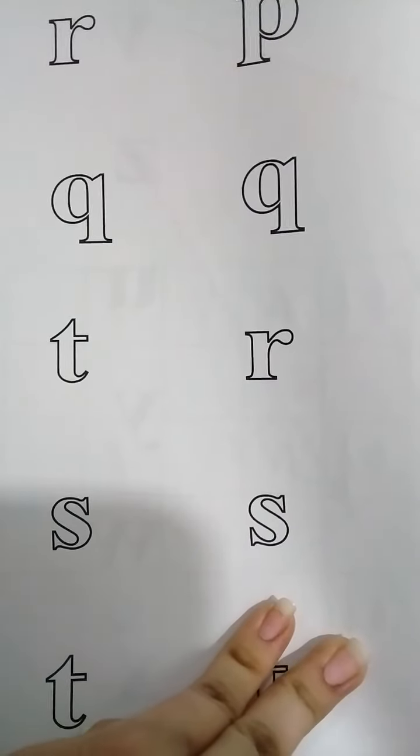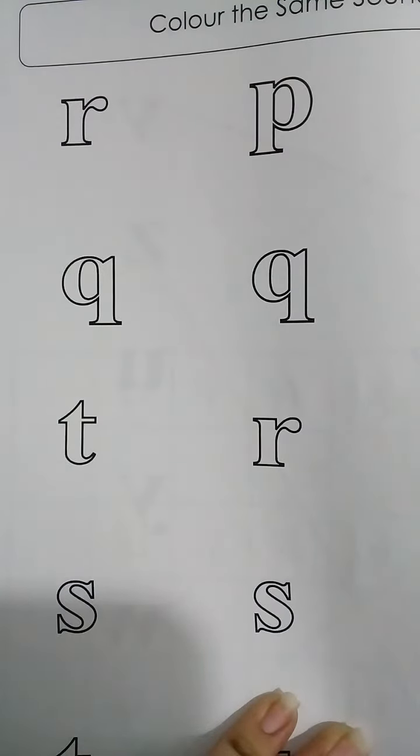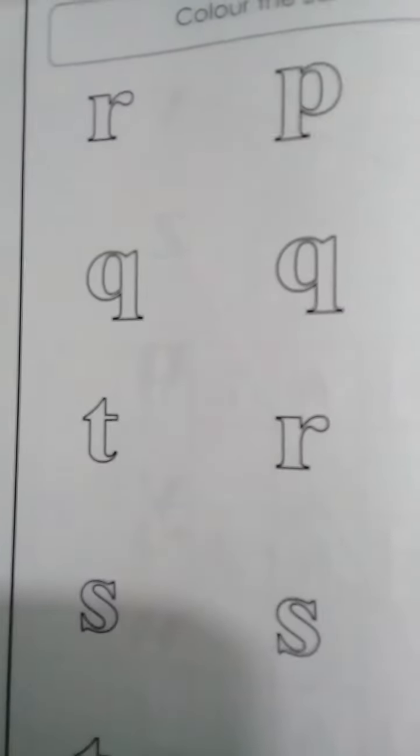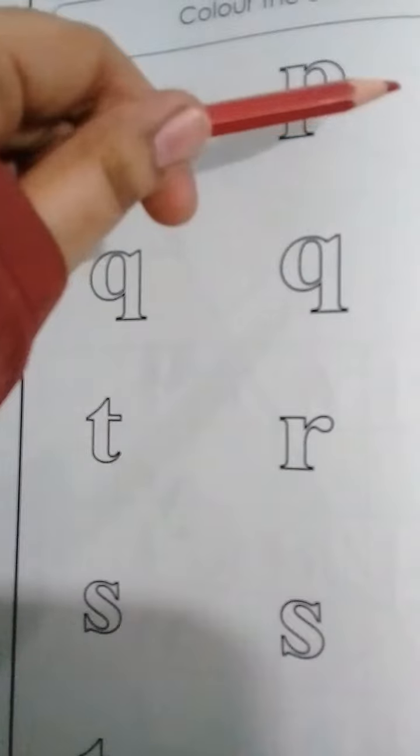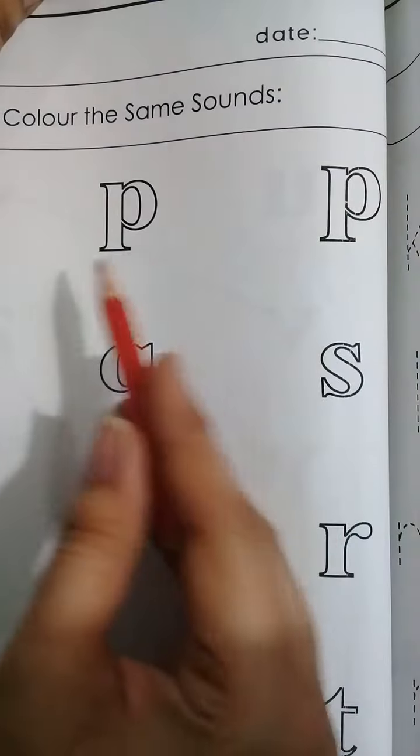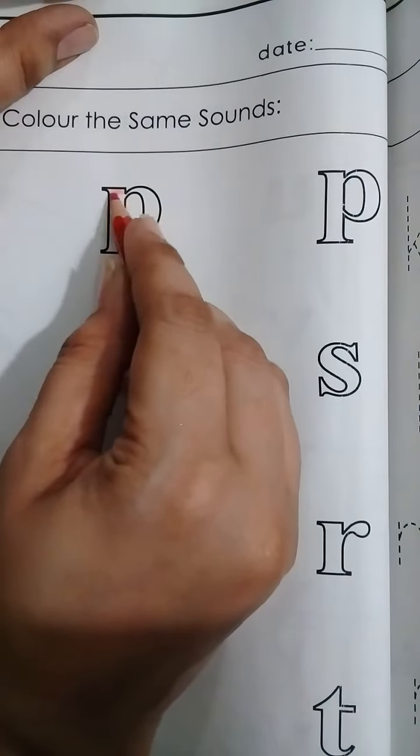Have you opened your folder? Now come to the page 'Color the Same Sounds.' The sounds are given on this page, like R, P, and P - these sounds are the same, then we color on these.